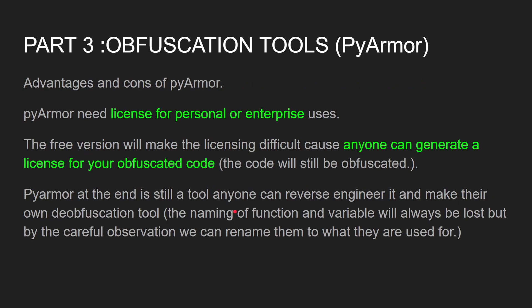The advantages and cons of PyArmor: PyArmor uses licenses for personal or enterprise use. The free version makes licensing different, because anyone can generate a license for your obfuscated code. The code will still be obfuscated, but others can also generate licenses for themselves. PyArmor is still a tool anyone can reverse engineer to make their own obfuscation tool. The naming of functions and variables will always be lost, but by careful observation, we can rename them to what they are used for.